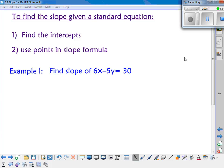To do that, you would find the intercepts and then use those two points in the slope formula. So for example, if I want to find the slope of 6x minus 5y equals 30,